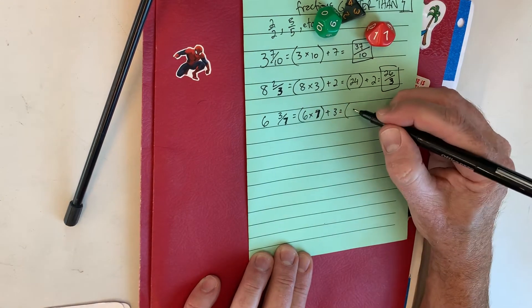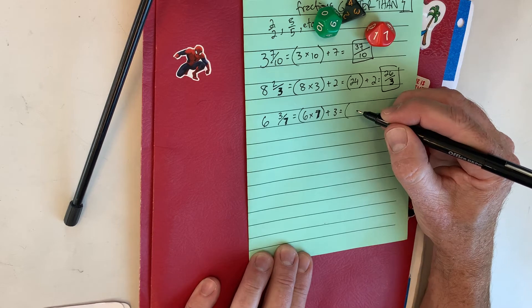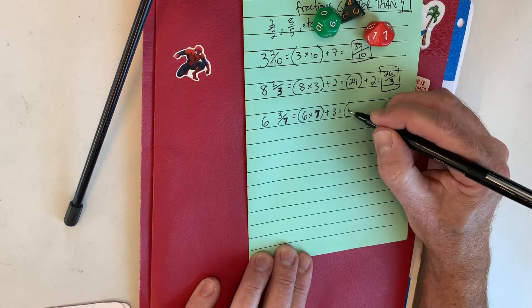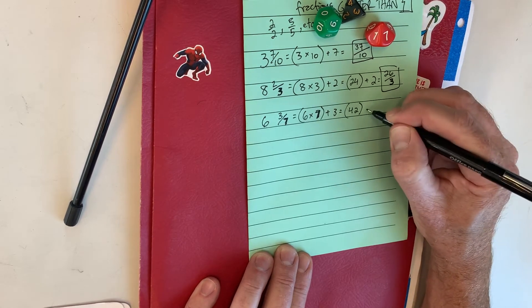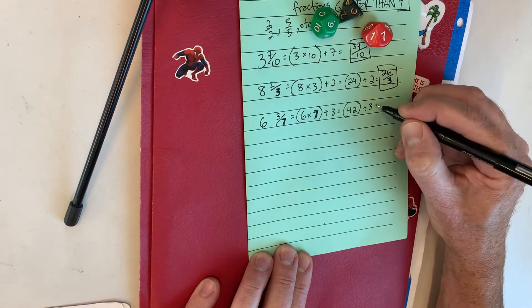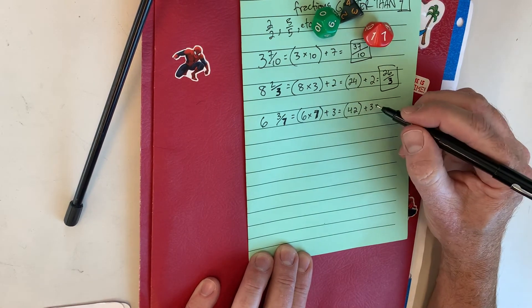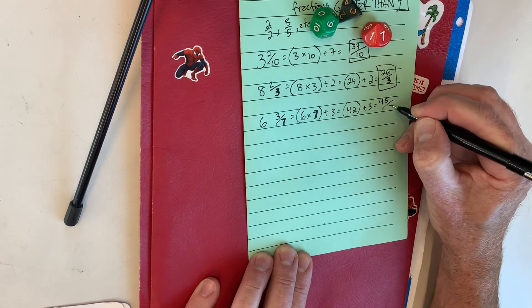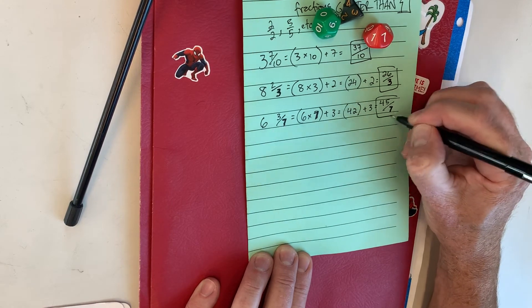Okay? So six times seven... thirty-five. That's five times seven. Six times seven is forty-two. Forty-two, increase it by three, equals forty-five over the denominator. So forty-five sevenths.